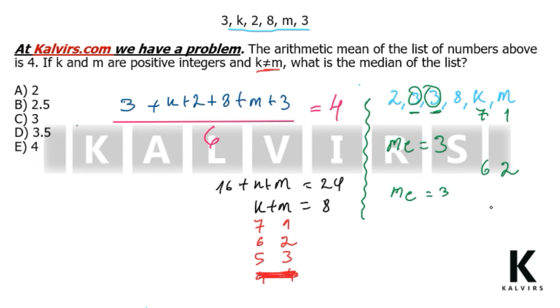And the last case, if we put 5 and 3, again we have the two 3s as central terms. Well, in this case, the median is again 3. And that's all. It was another question solved by Kalvirs Consulting. Thank you.